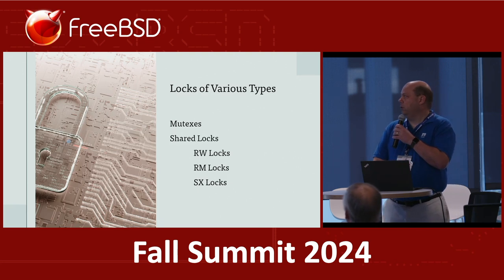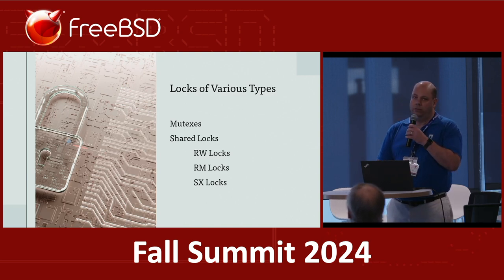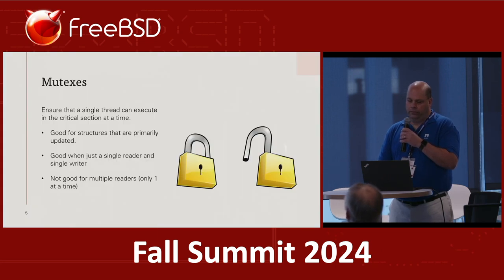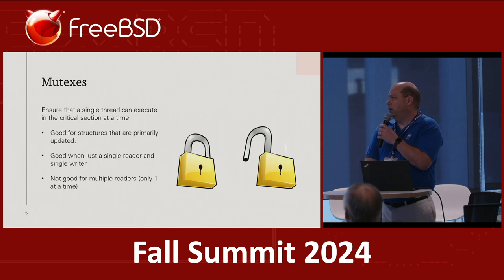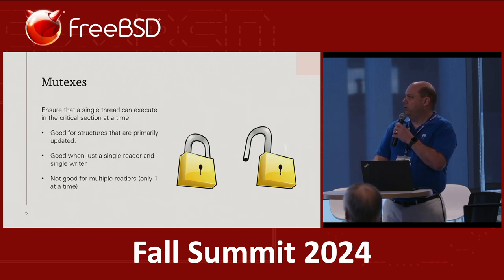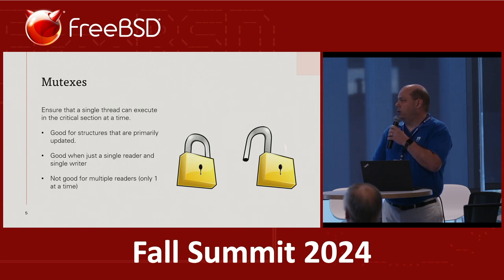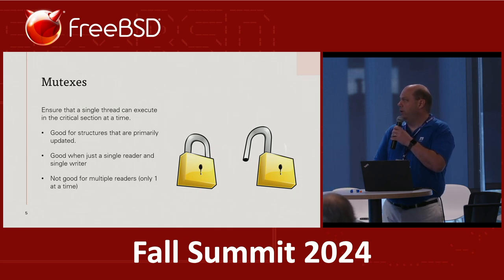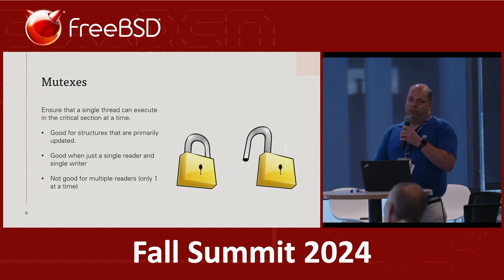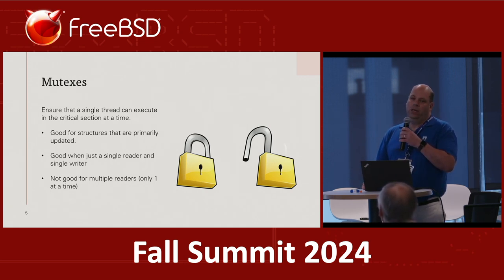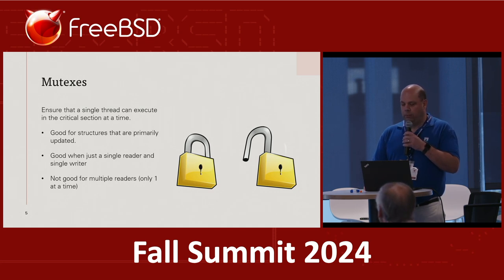There are a couple kinds of existing locks. We have mutexes and various types of shared locks. A mutex is just locked or unlocked — either a thread is executing in the critical section and no other threads can. That's good if you have structures that are mostly being modified. But it's not good if you just need to read a structure, because no other threads would be able to read that data.